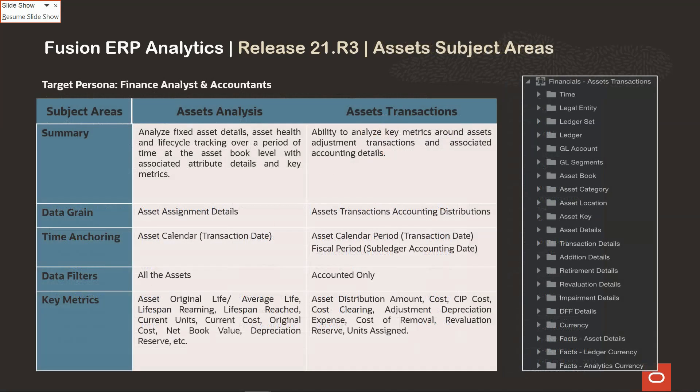Now let's move on to asset analytics. In this release, we have released two new subject areas: asset analysis and asset transaction. This will help customers using fixed assets in Fusion ERP Cloud. Their financial analysts and accountants can now use these subject areas to analyze assets data. Asset analysis subject area is focused on operational financial analysis of fixed assets at the grain of individual assets, which can be aggregated to the asset category level, books, assignments, location, etc. for the asset calendar period. It also enables trend analysis for cost, net book value, depreciation, and depreciation-related metrics.